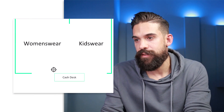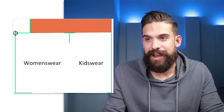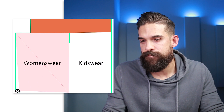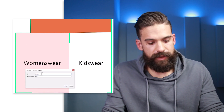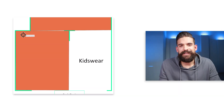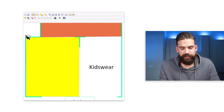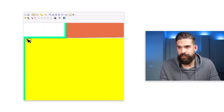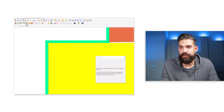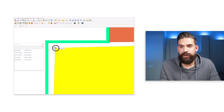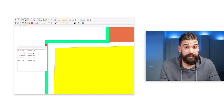Continue with the next polygon for womenswear. Click in all four corners, then right-click. This is ID number 2, and the department is womenswear. If you want to make adjustments, go to the selection tool, make your selection, and zoom in by holding the Control key and scrolling. Use the editing tools — click on a point once, then twice, and start moving it to wherever you like. Alternatively, you can right-click on a point to see all the x, y coordinates and adjust from there.